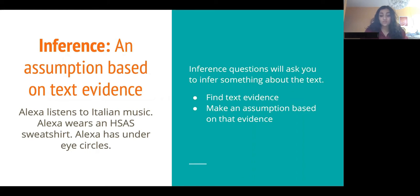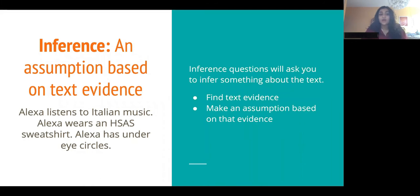You have to be careful that your answer doesn't draw conclusions that aren't supported by the text. For example, if we go back to those three sentences — say the first one, Alexa listens to Italian music — an inference could be that she likes Italian music or that it makes her happy, but going too far would be saying she must be fluent in Italian. Inferences do have to be connected to the evidence.